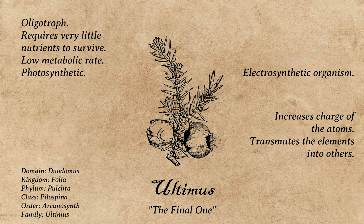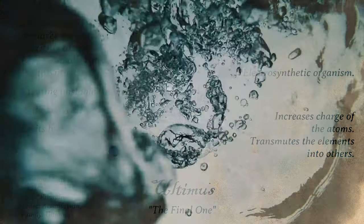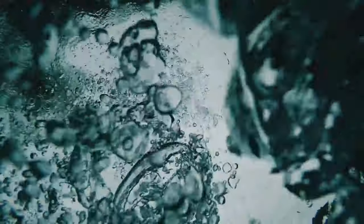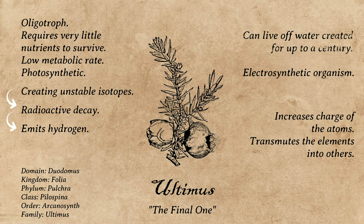But functionally, this means that Ultimis is creating unstable isotopes of elements which, through the process of radioactive decay, emit single protons which become hydrogen. This hydrogen then bonds with the oxygen trapped in the enclosed environment to create, you guessed it, water. Ultimis is literally creating its own water, atom by atom. And though the quantities created are borderline insignificant for most other organisms, it can live off these tiny quantities for up to a century.